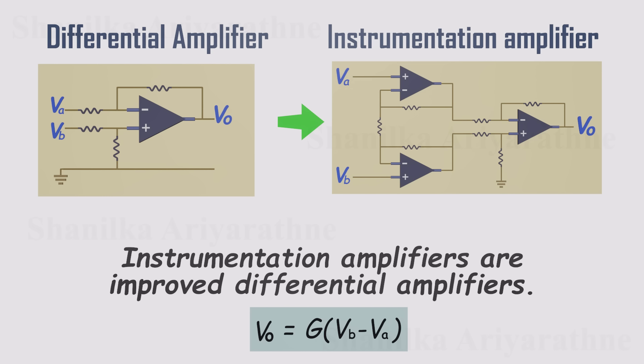Now, you might be wondering, if a differential amplifier already does the job, and it only uses one op amp and four resistors, why go through the trouble of building a more complex circuit like an instrumentation amplifier, which uses three op amps and seven resistors?